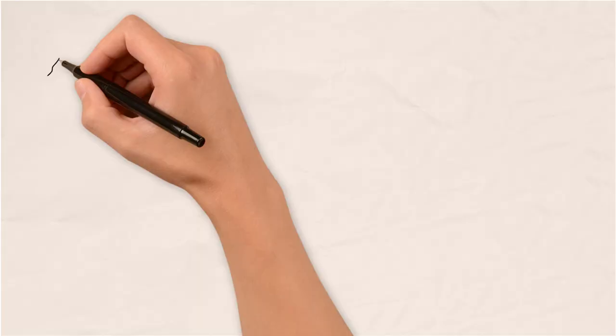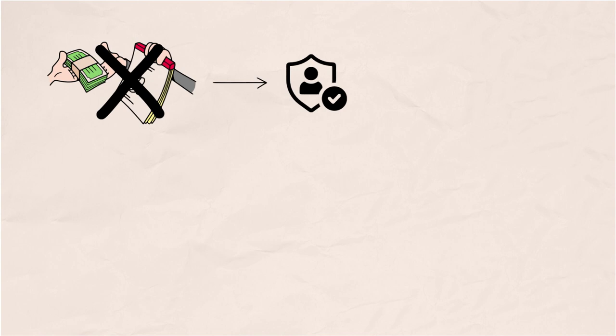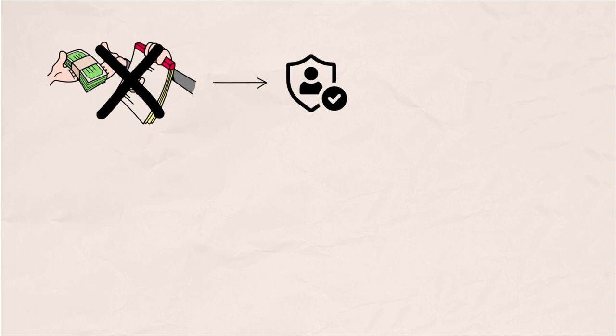Liu faced a pivotal choice: adapt or fade away. And boy, did he choose to adapt. JD.com wasn't just about transactions. It was about trust.